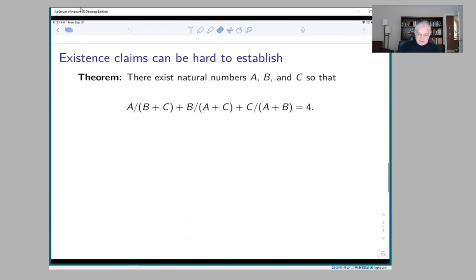I don't want to downplay the fact that this can be extremely complicated in practice. Sometimes existence claims are very deep. Here's one that looks like an equation: there exist natural numbers a, b, and c so that a/(b+c) + b/(a+c) + c/(a+b) = 4.